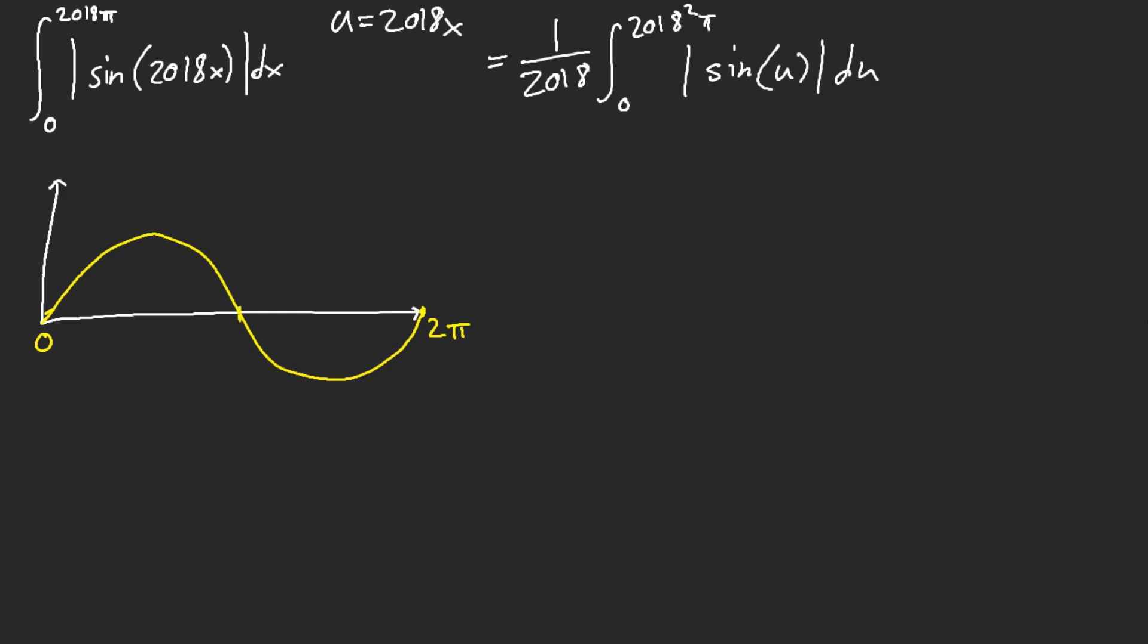Now, what is this? You should know that this point here is at pi. When you absolute value a function, everything here that's underneath the x-axis will get reflected immediately.